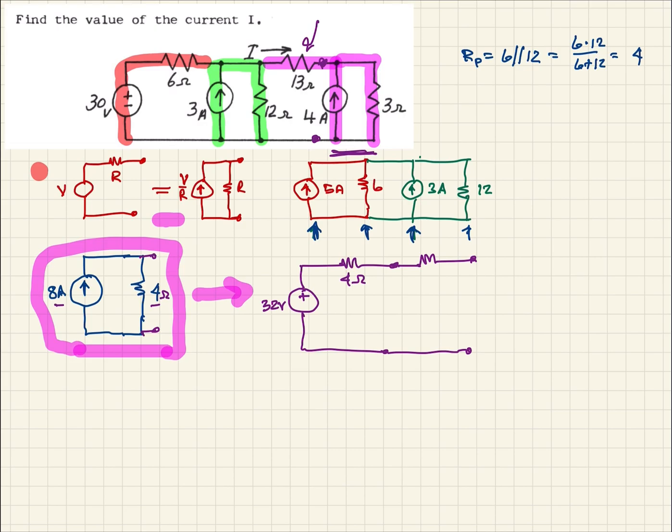And so to do that, remember we multiply the resistor times the current to get the value of our voltage source. So that's going to be 12 volts. And then our resistor stays the same and just moves in series. So there we're using source transformation again. This was 13 ohms, and this is 3 ohms.